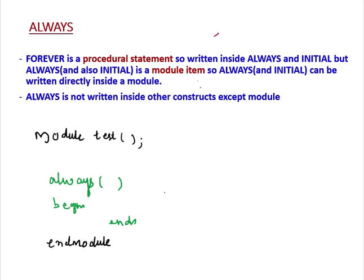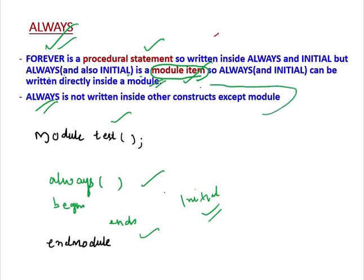Always and Initial are Module Items — that is important to remember. They have to be written directly inside a Module. If you directly write Always or Initial inside a Module, it is not going to show you an Error like Forever does. But if you write an Always Block inside any other construct except the Module, then it is going to show you an Error.